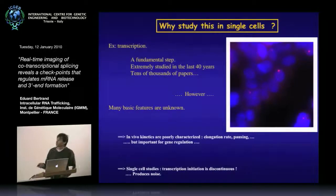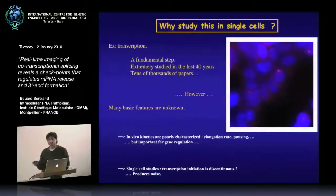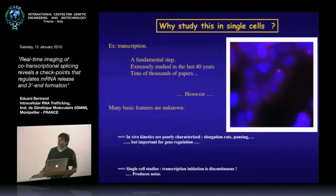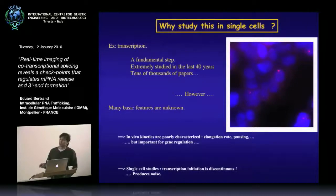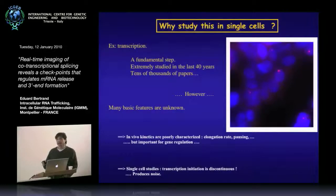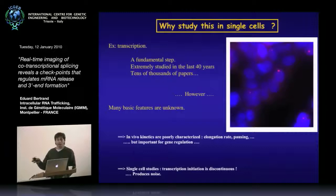We know that these are important parameters for the regulation of gene expression. And when you start to look at things in single cells, you can have surprises. One of the discoveries made in the last few years is that transcription initiation is not a continuous process — it's a discontinuous one, where the gene goes through phases when it's on and phases when it's off.